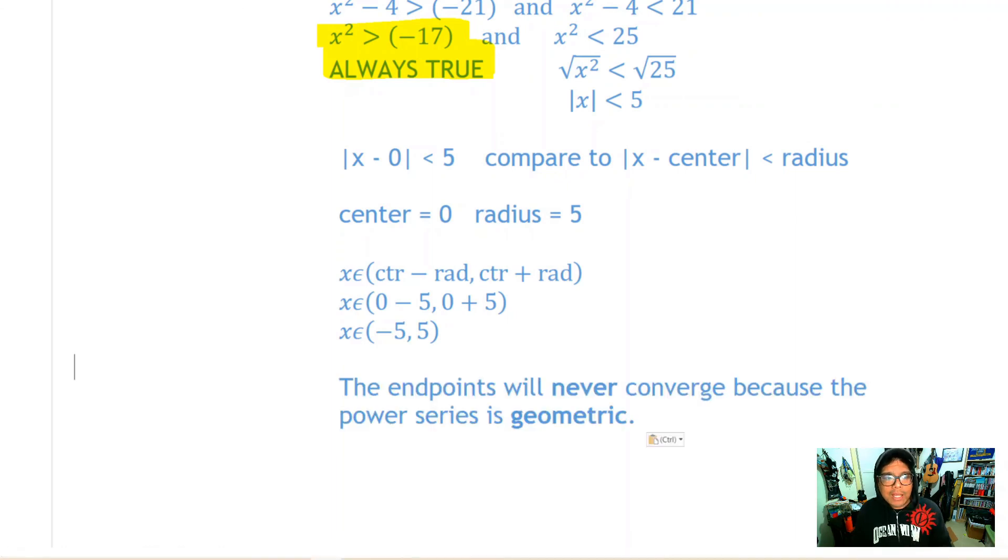Remember that the endpoints of a geometric series are never going to converge. So we are actually finished. The interval of convergence is x must be between -5 and 5. No need to test the endpoints on a geometric series. So that's it for this one and we'll see you for more calculus next time.